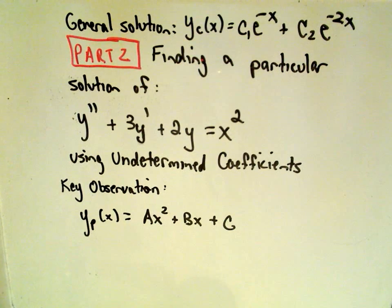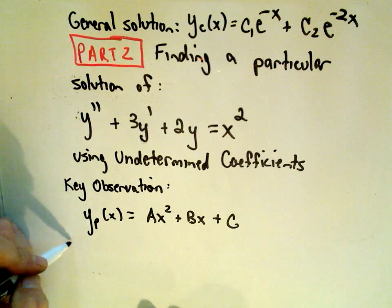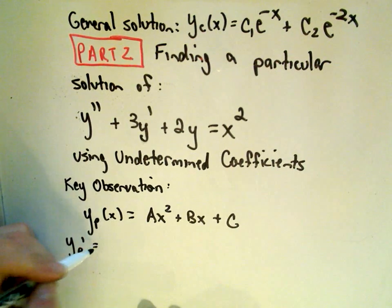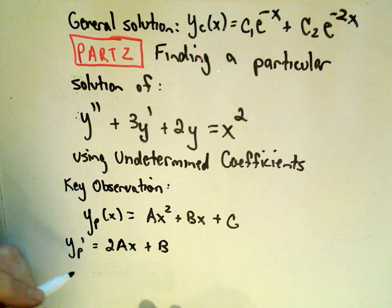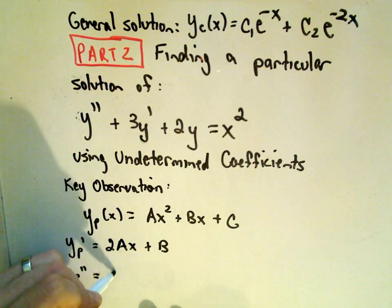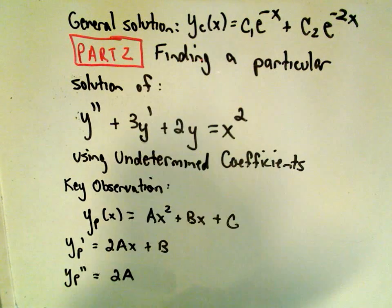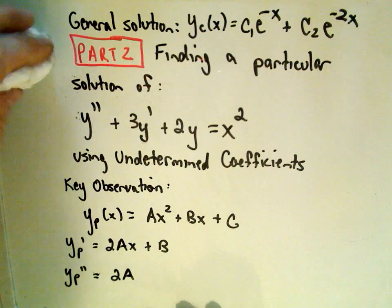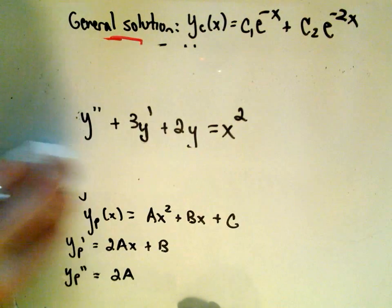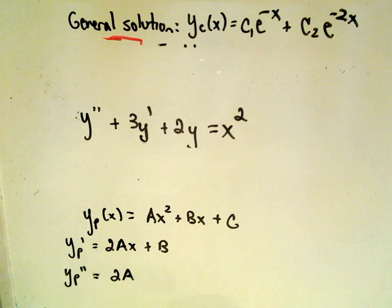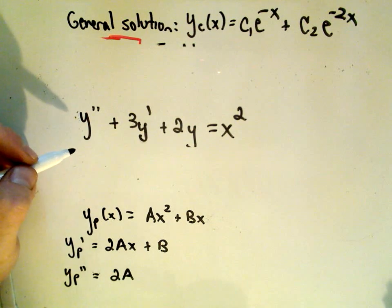So once we have this, this is where we do this method of undetermined coefficients. The idea is, if I were to take the first derivative of this, I would just get 2ax plus b, and if I were to take the second derivative of this, I would simply be left with 2a. So what we're going to do is we're going to plug that back into our differential equation, and then just try to solve it.